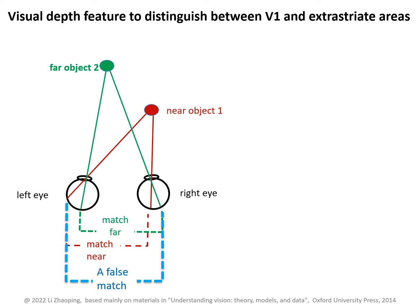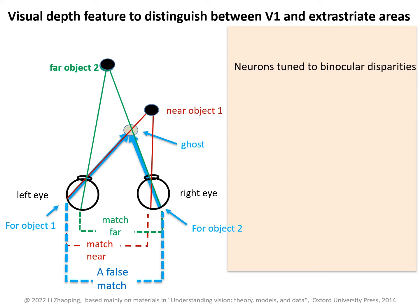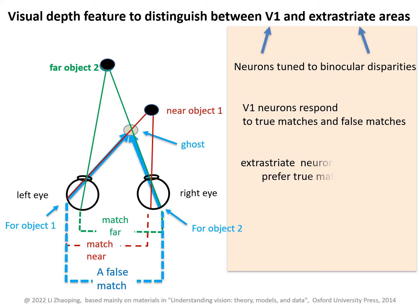If the match is incorrect — for example, the left eye image location is for object number one and the right eye image location is for object number two — then one would perceive a ghost object in space. Such a false match is more likely to occur when the two objects appear similar, so their images for the two eyes are also similar. There are neurons tuned to binocular disparities to signal these matches in V1 and extrastriate cortex. However, V1 neurons respond to both true and false matches, but extrastriate neurons prefer true matches. This suggests that proper depth perception in stereo vision is associated with visual cortical areas beyond V1.